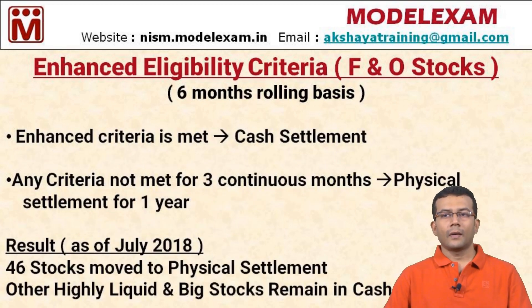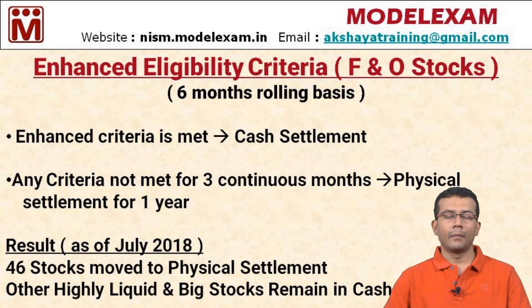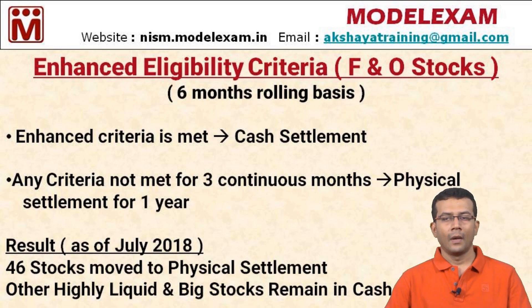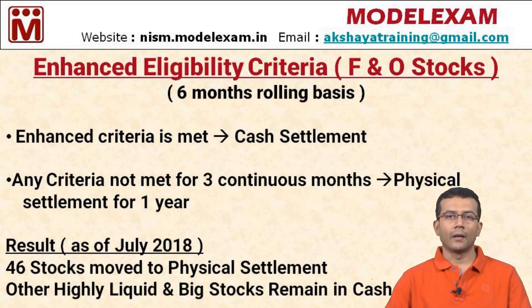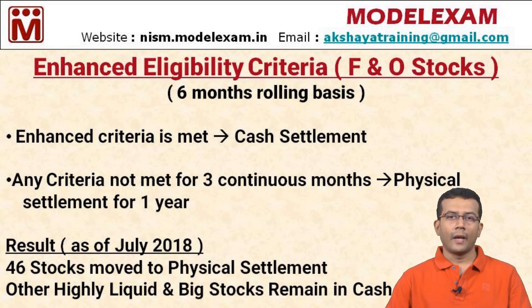If any stock meets all four enhanced criteria, it will remain in cash settlement mode. If any of the criteria is not met for three continuous months, the stock will be moved to physical settlement in the F&O segment for a period of one year. In cash settlement, on the expiry day, any outstanding positions are settled for either a profit or a loss. Physical settlement came into the picture from July 2018.